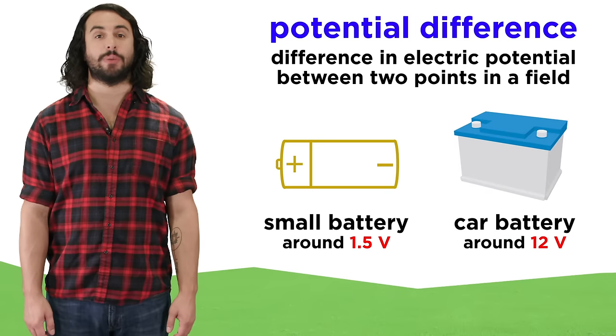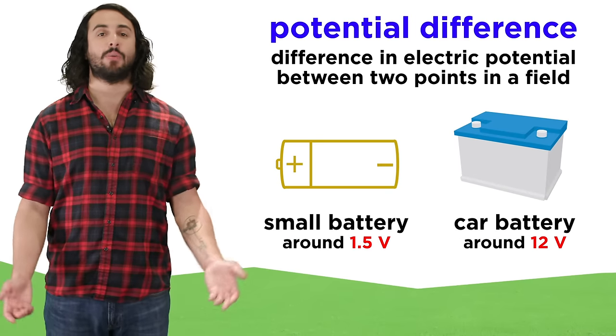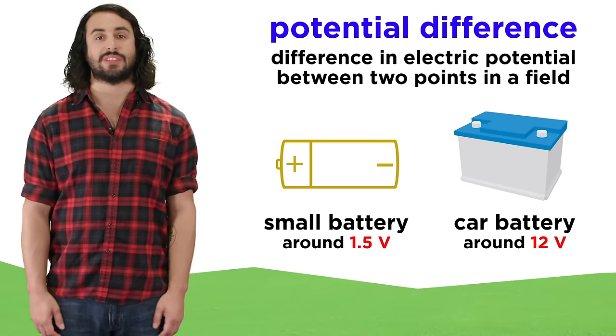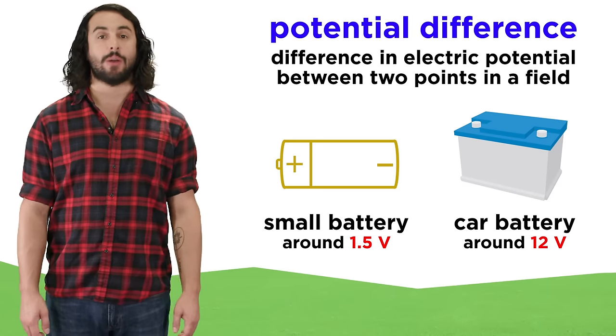The potential difference for the two terminals of a common battery is anywhere from about 1.5 volts for small batteries to around 12 for a car battery.